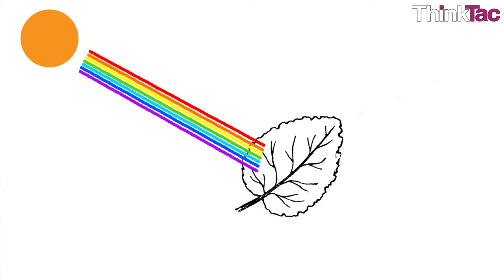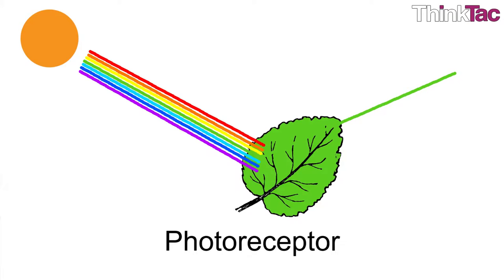The green wavelengths are reflected, giving that unmistakable color to plants. Since it is a light absorbing pigment, chlorophyll is called a photoreceptor.